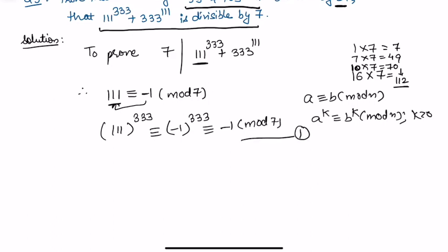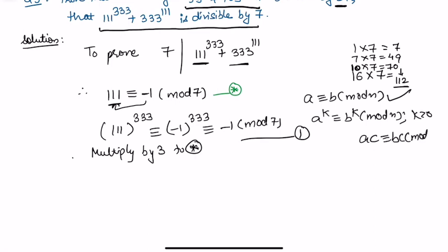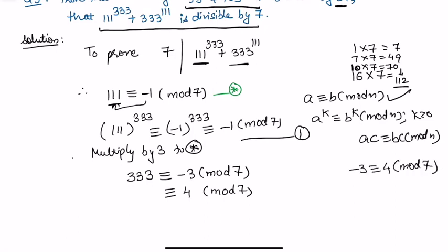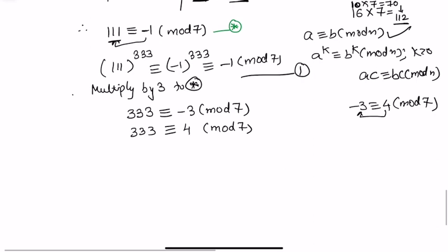Now let's reduce the next case. We use the property that if a ≡ b (mod n), we can multiply both sides by a constant. Multiplying our earlier result by 3, we get 333 ≡ -3 (mod 7). And since -3 ≡ 4 (mod 7) — because moving 3 to the other side gives ±7 — we have 333 ≡ 4 (mod 7).